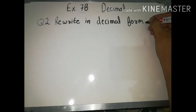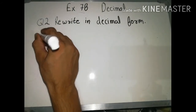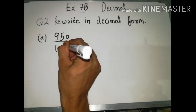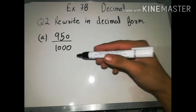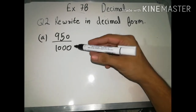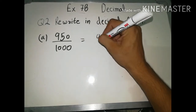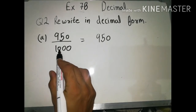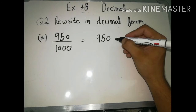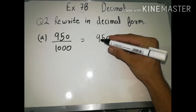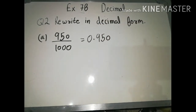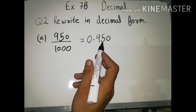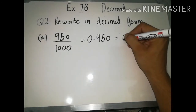Question two asks us to rewrite fractions in decimal form. For part A, we have a fraction and need to convert it to a decimal number. First write the numerator the same, then count the zeros in the denominator: one, two, three — so we put the decimal after three digits from the right. Since it is thousandths, there will be three digits after the decimal. We can write it as 0.095.